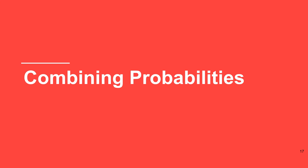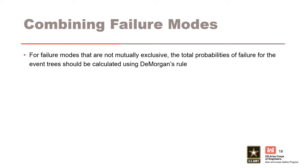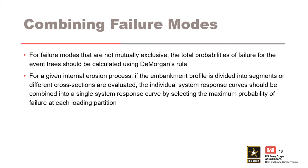Combining probabilities. Careful consideration must be given when combining probabilities of failure. For failure modes that are not mutually exclusive, the total probabilities of failure for the event tree should be calculated using DeMorgan's rule. For a given internal erosion process — for example, internal migration into open rock defects — if the embankment profile is divided into segments or different cross sections are evaluated due to physical differences in geology, geometry, treatment, etc., the individual system response curves should be combined into a single system response curve by selecting the maximum probability of failure at each loading partition. The maximum probability governs the overall performance.